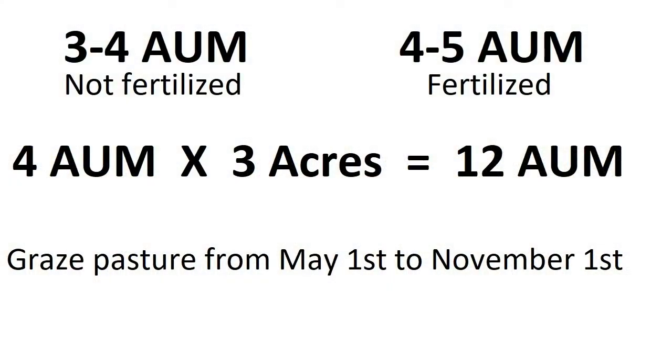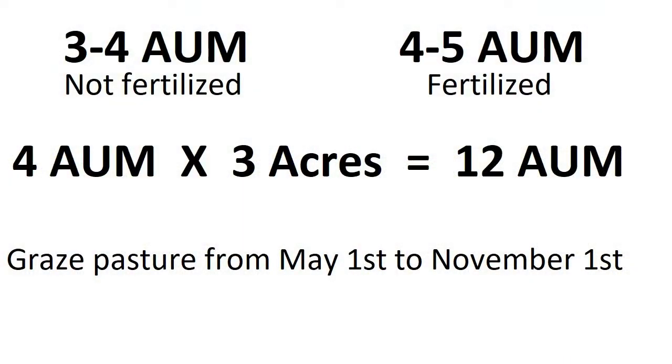In my area, eastern Nebraska, if I have pasture that I'm not fertilizing, I can run three to four animal unit months per acre. If I fertilize, I can have four to five animal unit months per acre. I did fertilize this year and last year, so we're going to split down the middle and go to four — my pasture will handle four animal unit months per acre. I have a total of three acres, so I take four animal unit months times three acres, giving me a total of twelve animal unit months. That's my carrying capacity for my pasture.